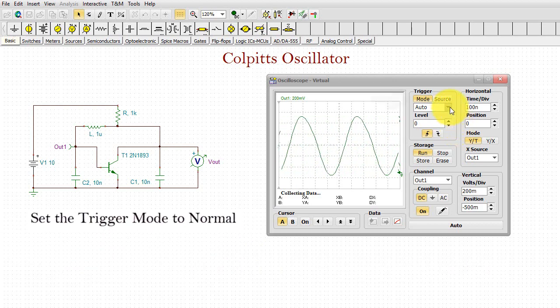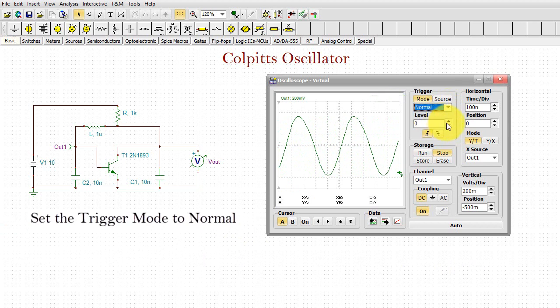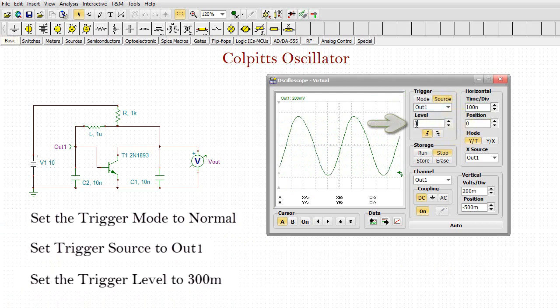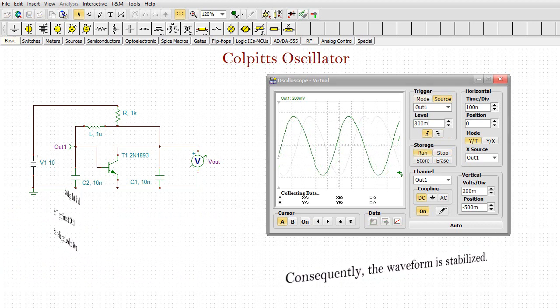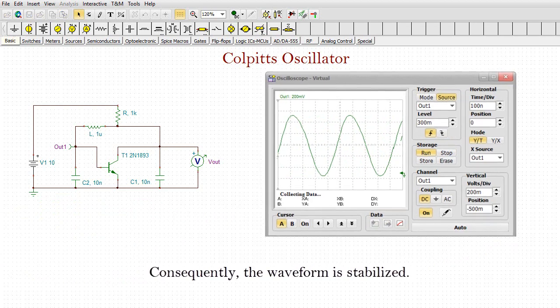Set the trigger mode to normal. Set the trigger source to OUT1. Set the trigger level to 300 millivolts. Consequently, the waveform is stabilized.